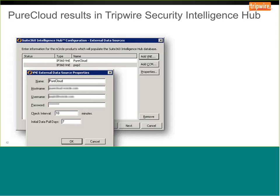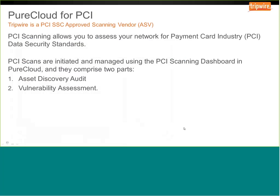The screenshot on screen shows what that setup looks like. It's fairly easy to set up the integration so you can see your Pure Cloud results side by side with results from IP 360. Tripwire's PCI approved scanning vendor service allows you to address the ASV requirement of the PCI standard. It's a two-step process: first, discover what assets are in scope for the ASV, then perform an assessment. The results come back, can be amended, and sent to your institution to prove compliance.